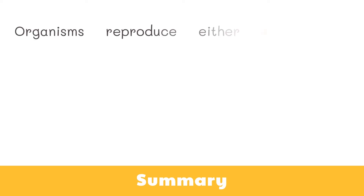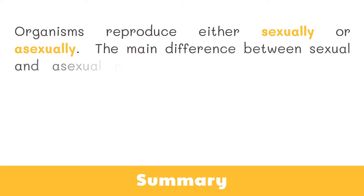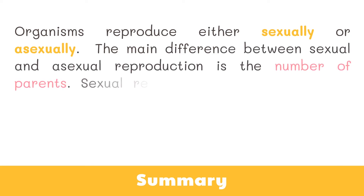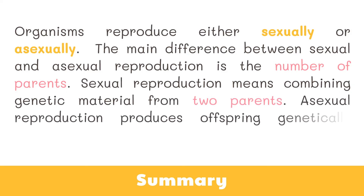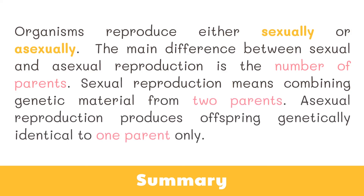To wrap things up: organisms reproduce either sexually or asexually. The main difference between sexual and asexual reproduction is the number of parents. Sexual reproduction means combining genetic material from two parents, while asexual reproduction produces offspring genetically identical to one parent only. In our next video, we will be discussing biotic and abiotic factors in an ecosystem, as well as the different ecological relationships.